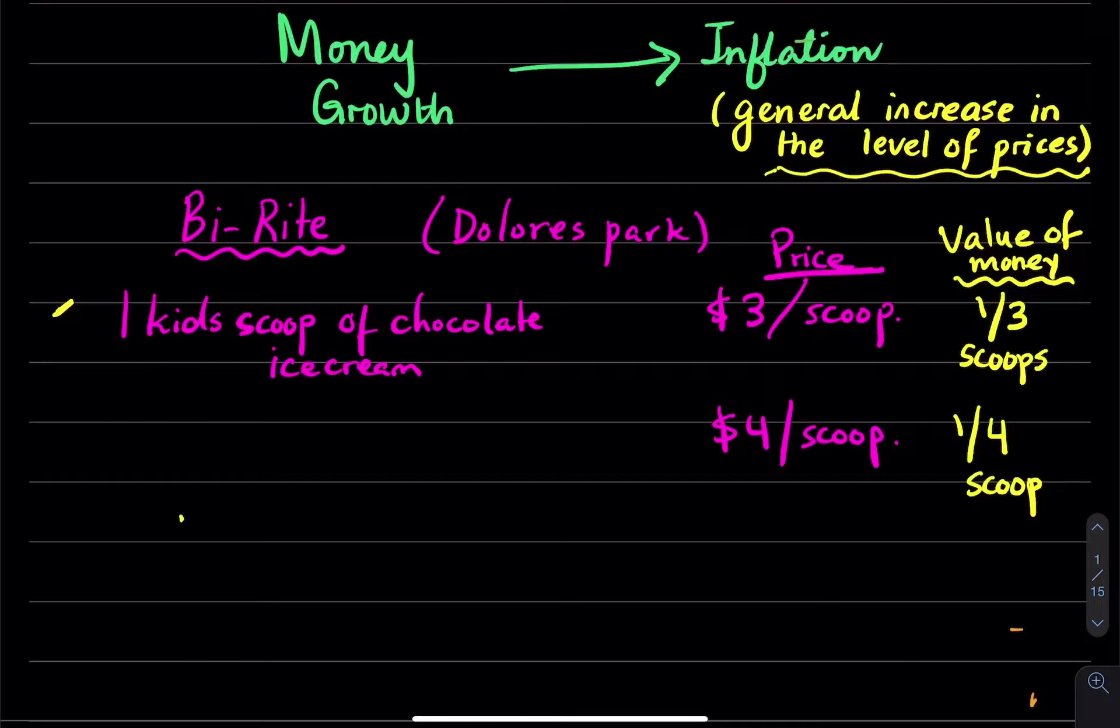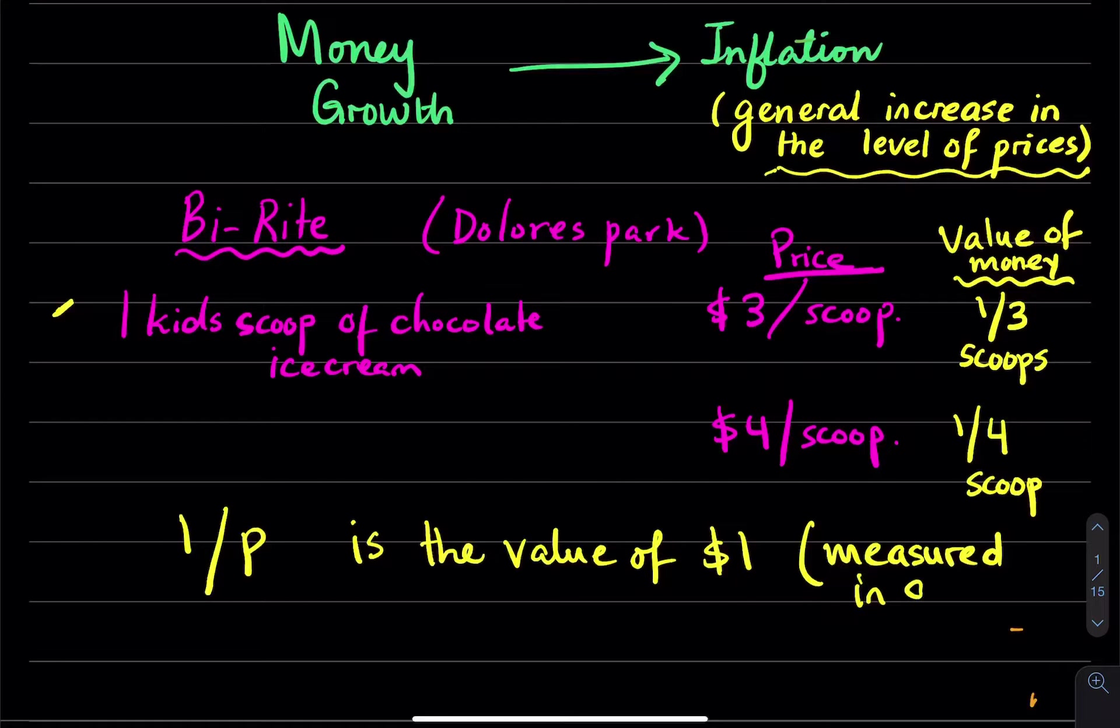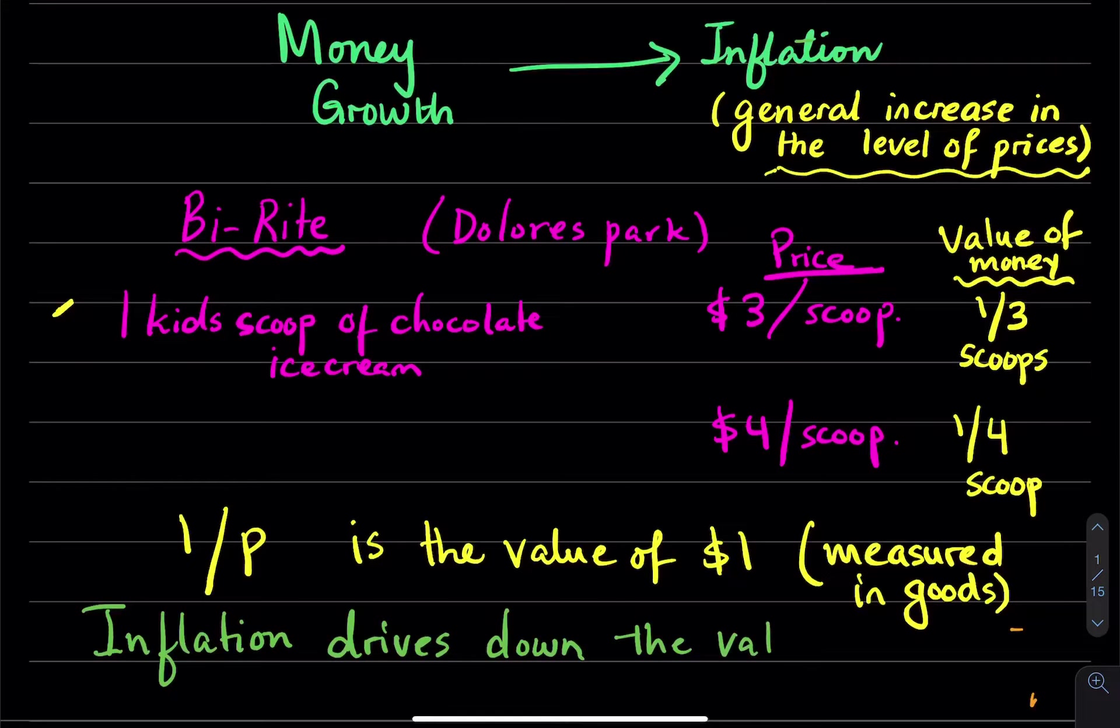So what we're seeing here is that 1 over the price level is the value of $1, and this is measured in goods - not in dollars, but in what I can buy. With this example, we understand that inflation drives down the value of money.